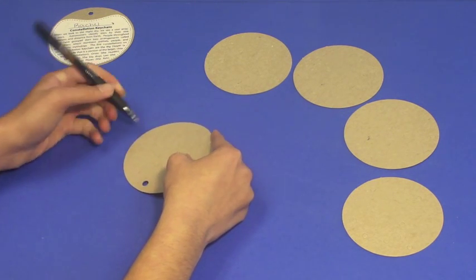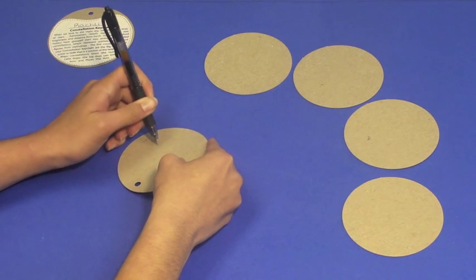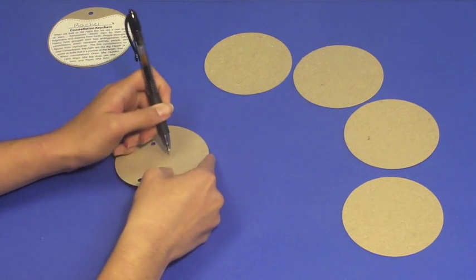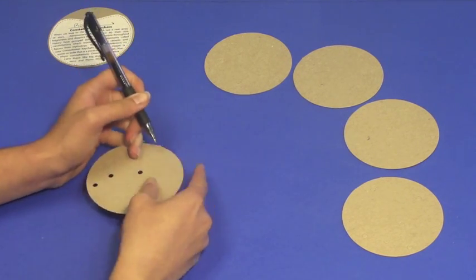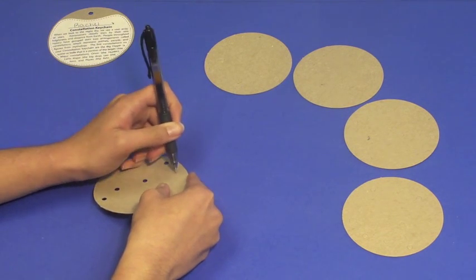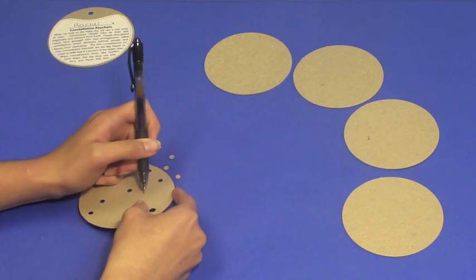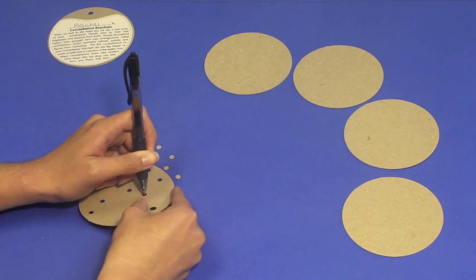They are then prepared to begin poking out the pre-punched holes that represent the stars in each of the other disks. Have them go through each disk individually, punching out all holes.